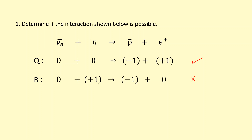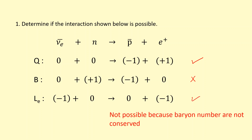The anti-proton is an anti-baryon so it has baryon number minus one. Baryon number is not conserved — on the left we have plus one, on the right minus one — so this interaction is not possible. Lepton number is actually conserved, but that doesn't matter; since baryon number isn't conserved, this interaction cannot take place.